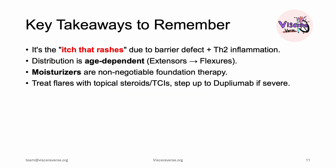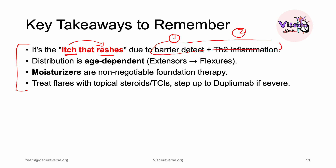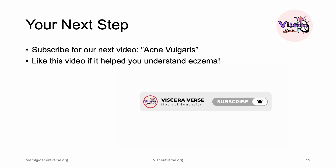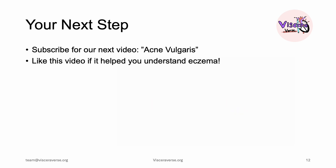That's it for atopic dermatitis. Key takeaways: atopic dermatitis is the itch that rashes — it starts with itching, then you develop a rash. We have the two-hit theory: barrier defect and immune dysregulation. Distribution is age-dependent, which is a critical diagnostic hallmark. Moisturizers are non-negotiable foundation therapy. Treat flares with topical corticosteroids, or calcineurin inhibitors for sensitive areas. For severe disease not responding to these, use dupilumab or other systemic treatments. Next up: acne vulgaris.